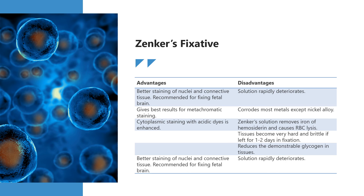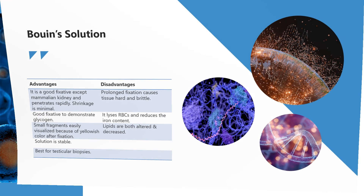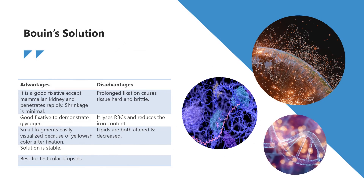Zenker's fixes nuclei very well and gives good detail. However, the mercury deposits must be removed before staining or black deposits will result in the sections. Bouin's solution is sometimes recommended for fixation of testis, GI tract, and endocrine tissue. It does not do a bad job on hematopoietic tissues either, and doesn't require desanchorizing before staining.